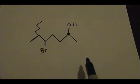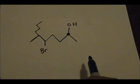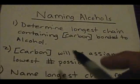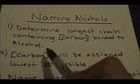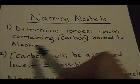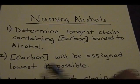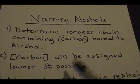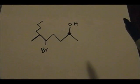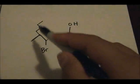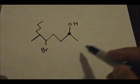Step two. We know it's going to be a ten-carbon chain as the parent chain. Step two states that the carbon bonded to the alcohol will be assigned the lowest possible number. There are two ways to number the parent chain — we can number it from right to left or from left to right.